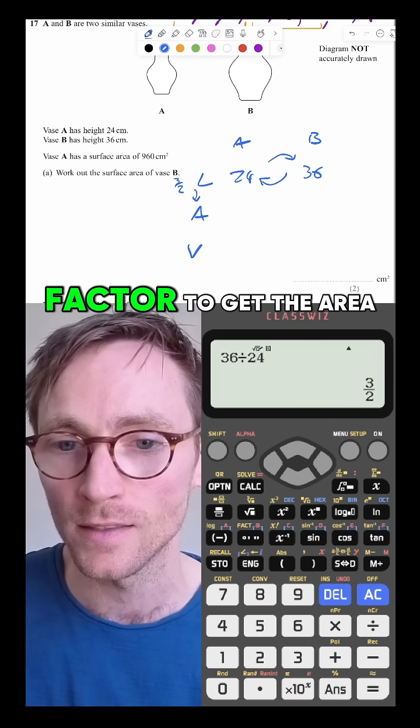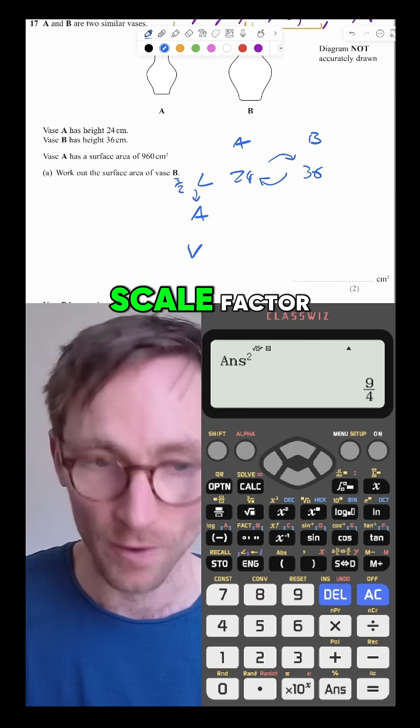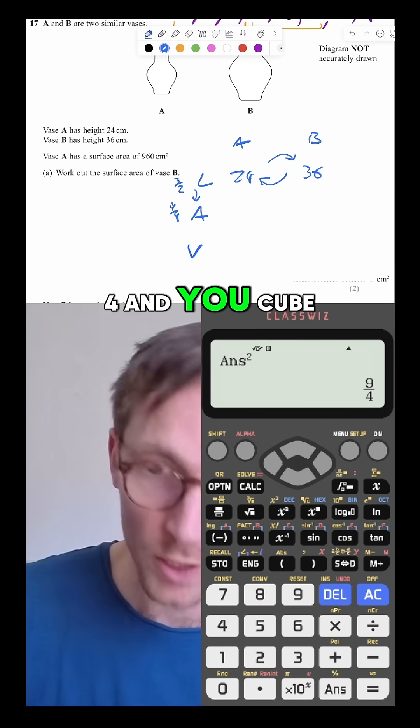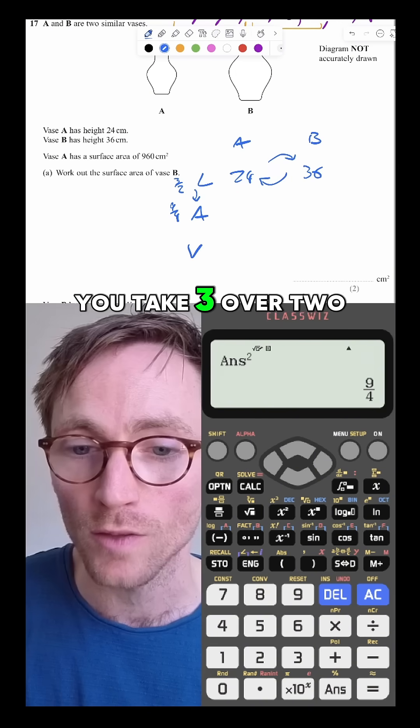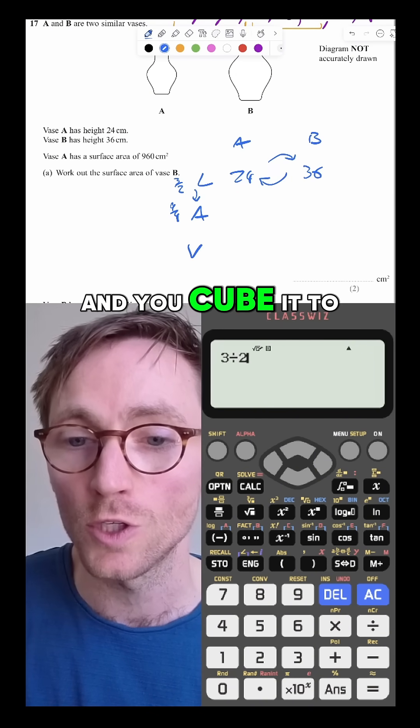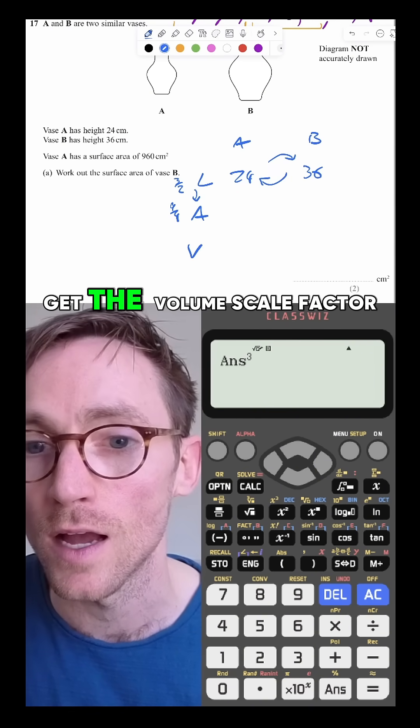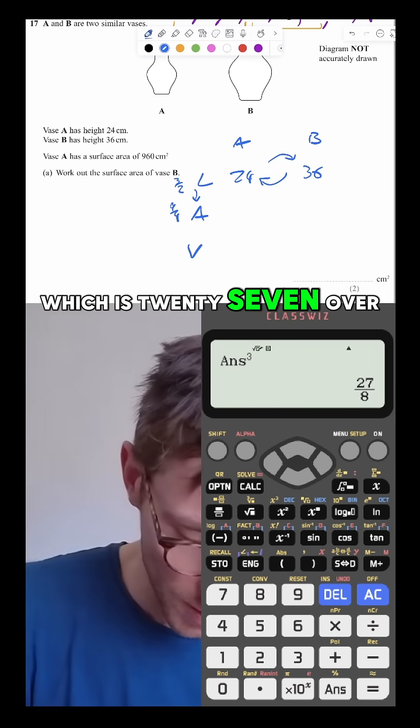Then you square the scale factor to get the area scale factor. So this is 9 over 4. And you cube, you take 3 over 2 and you cube it to get the volume scale factor, which is 27 over 8.